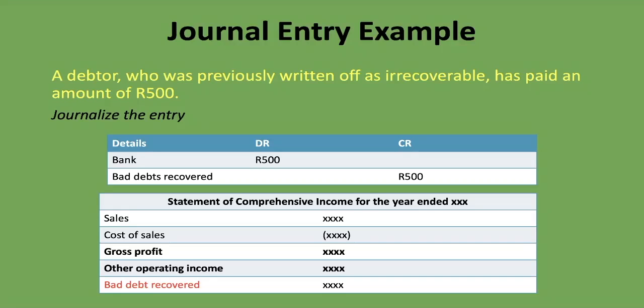That is how you journalize bad debt recovered and how you account for it in the statement of comprehensive income. We've done lessons on the statement of comprehensive income as well as other lessons pertaining to bad debts — you'll find all of them in the links in the description below. I hope you've gained value from this lesson. If you have, please subscribe to our channel, like this video, and share it with those who think it might help. Till next time, cheers.